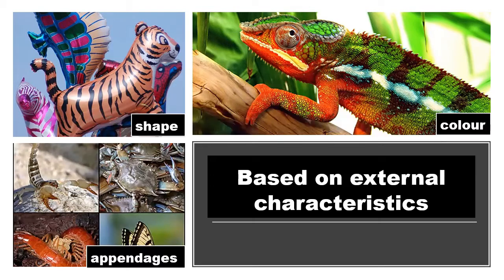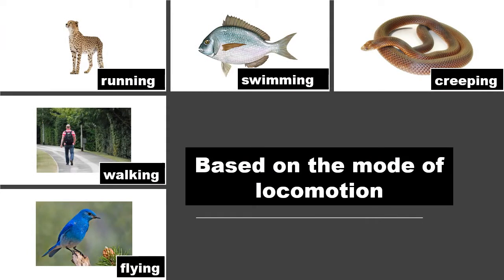Based on external characteristics, animals vary in shape, color, and appendages. Based on the mode of locomotion, animals can be classified as running, swimming, creeping, walking, or flying.